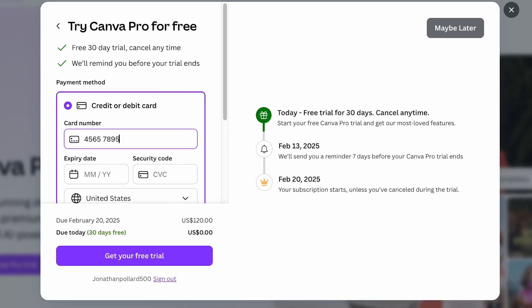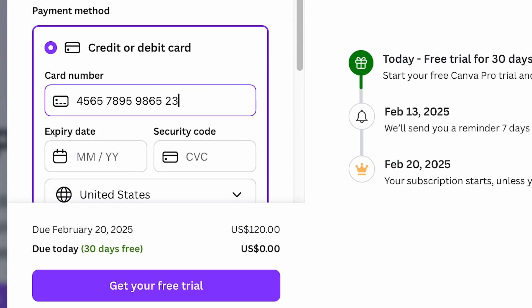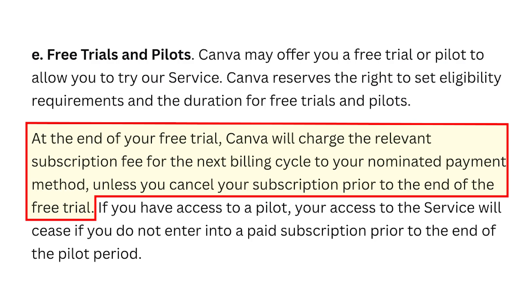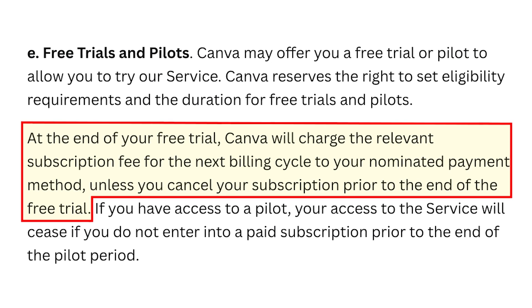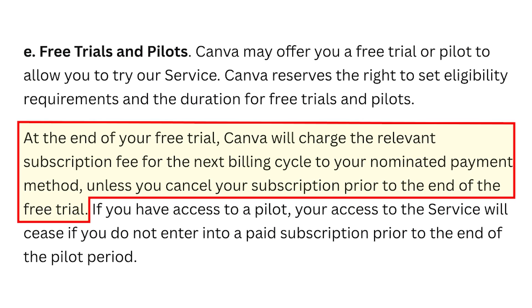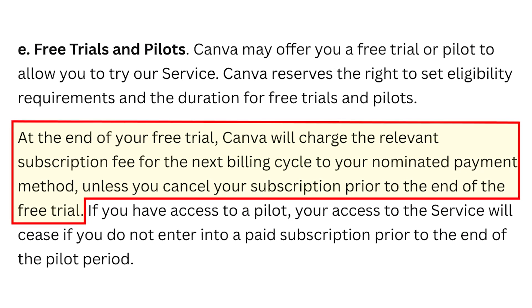Step 4: Enter your card details. It's then a case of entering your credit card or PayPal details. This may seem a bit off-putting, but remember that payment will only be taken if you don't cancel your trial before your 30 days are up.